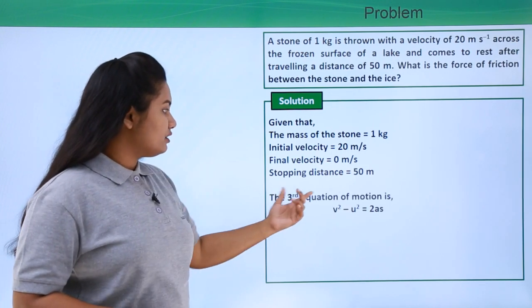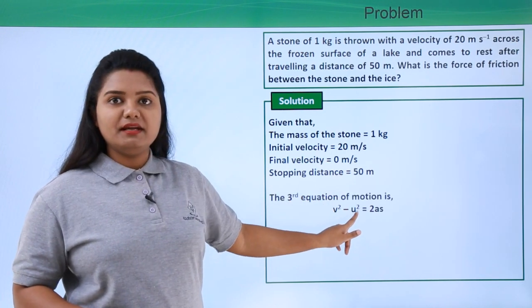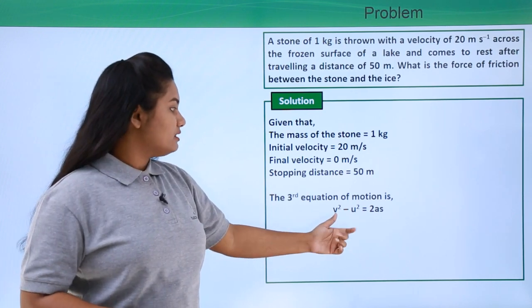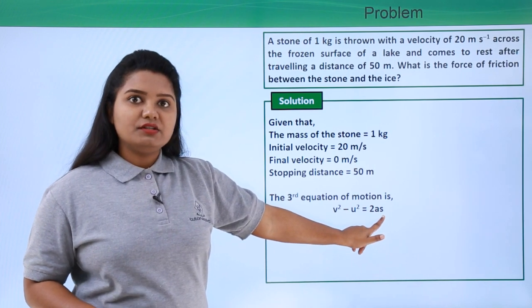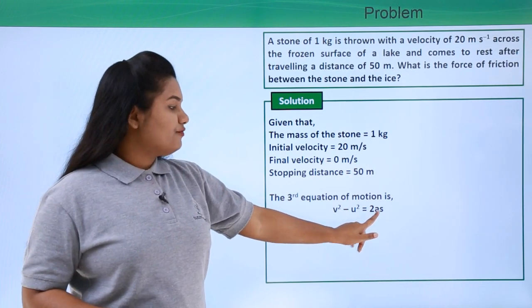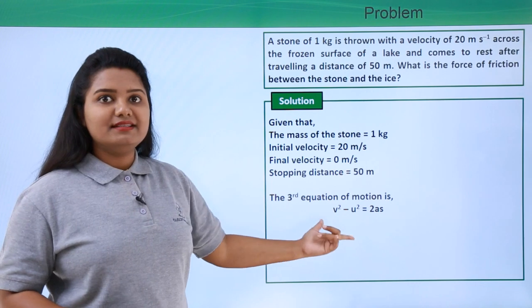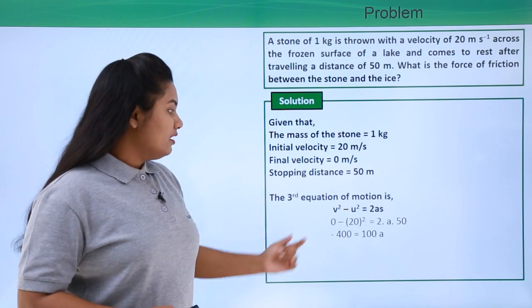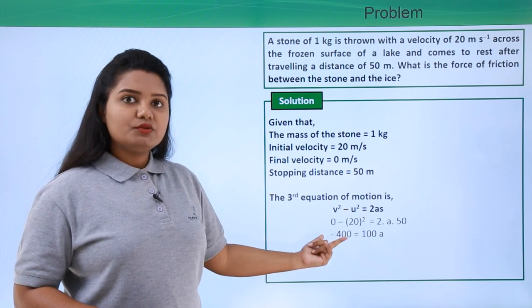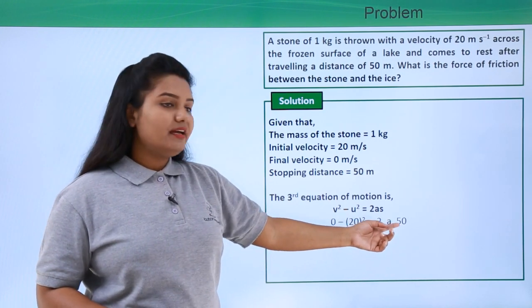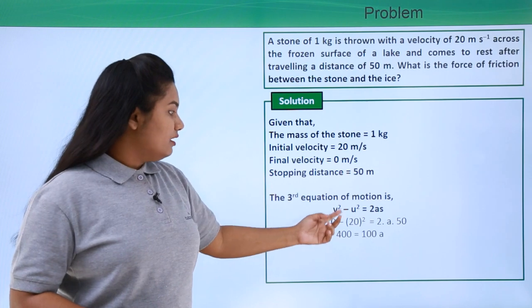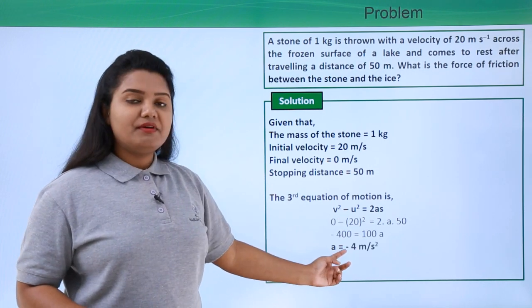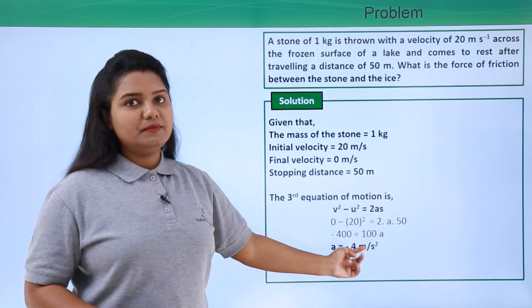From the third equation of motion, we have v² - u² = 2as. We have the final velocity, the initial velocity, and the displacement or stopping distance. We need to find the acceleration from this expression. Let us substitute all the values. On doing that, we have 0² - 20² = 2a × 50. So -400 = 100a. The acceleration is found to be -4 meters per second squared.